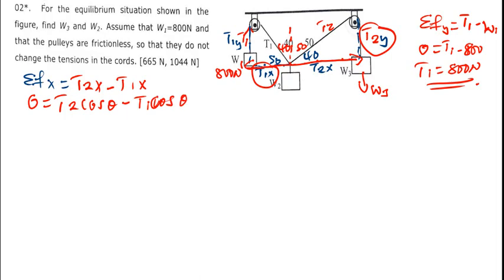We have to shift T1 to the other side, so it will be T1 cos theta being equal to T2 cos theta. But we know what T1 is.